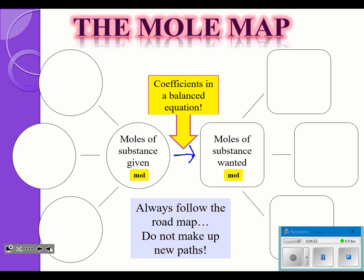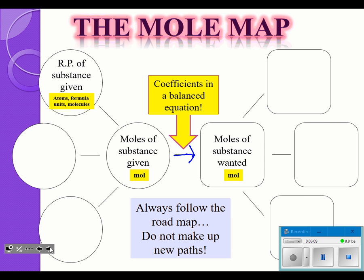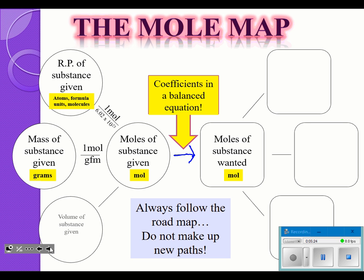This is what we call a mole-to-mole ratio. You put the moles of the given on the bottom and the moles of the wanted on the top, because we're really just doing dimensional analysis. If we start with representative particles — atoms, formula units, or molecules — we divide by 6.02 × 10²³ to get to moles. If we start with mass in grams, we divide by the GFM to get to moles. If we start with volume in liters, we divide by 22.4 liters to get to a mole.